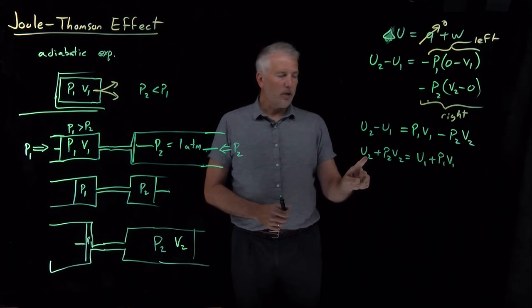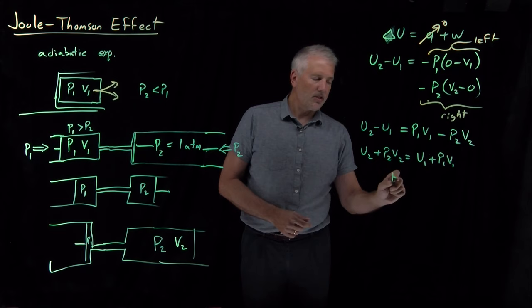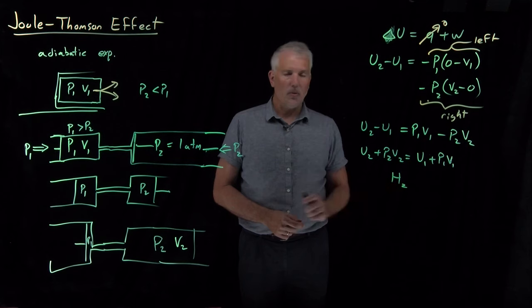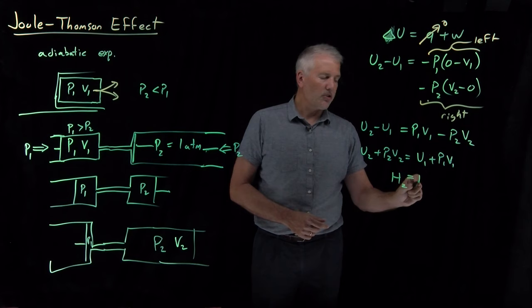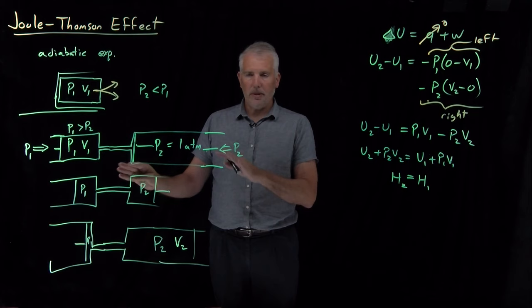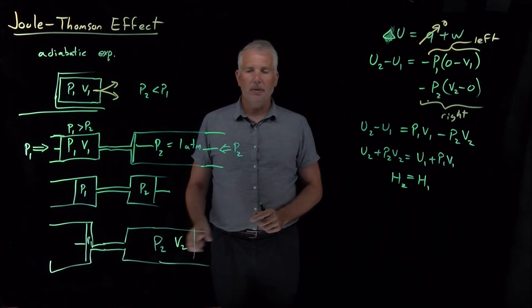So on the left side, I've got U plus PV at conditions two, in other words, the enthalpy at the final conditions. And on the right side, I've got U plus PV at the initial conditions, or the enthalpy at the initial conditions. So what that has just showed us is, despite the fact that I'm changing the pressures and the volumes, and despite the fact that some PV work is going on, the internal energy may be changing, but the enthalpy is not changing. The enthalpy of the system before and after the PV expansion is exactly the same.